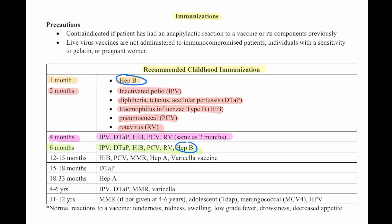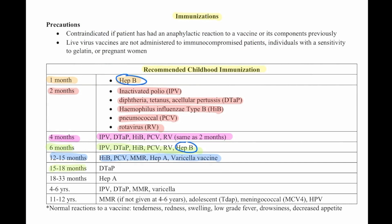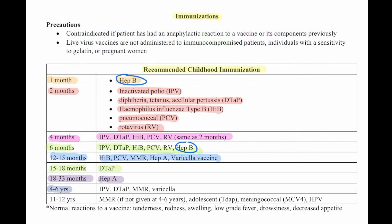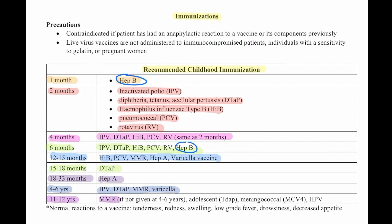At 12 to 15 months, they'll get influenza type B, pneumococcal, MMR, hepatitis A, and varicella vaccine. At 15 to 18 months, a DTaP. At 18 to 33 months, another hepatitis A. At 4 to 6 years, inactivated polio, DTaP, MMR, and varicella. At 11 to 12 years, they'll get an MMR if not given at 4 to 6 years, an adolescent DTaP, a meningococcal, and an HPV.